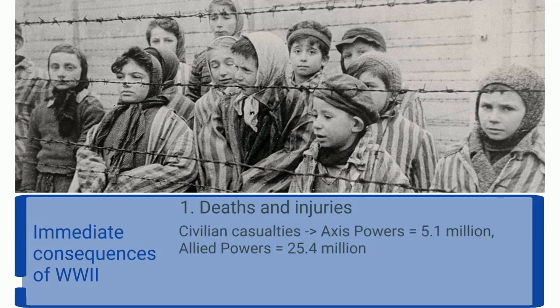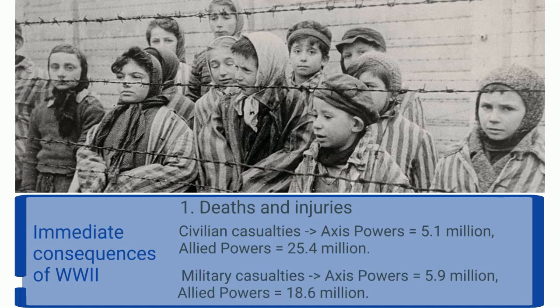The Axis powers had about 5.1 million civilian casualties, while the Allied powers had about 25.4 million civilian casualties. The Axis powers had 5.9 million military casualties, while the Allied powers had 18.6 million military casualties.